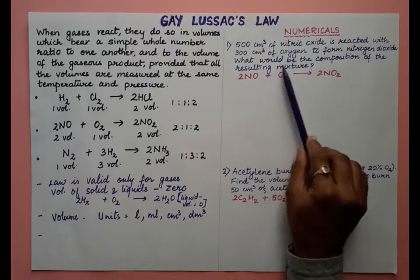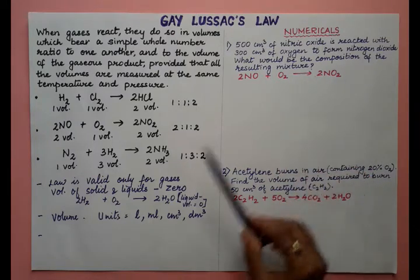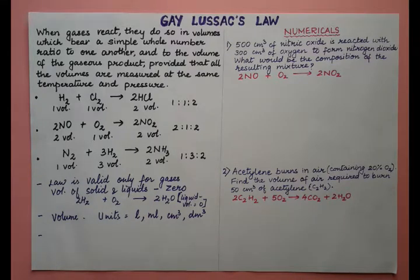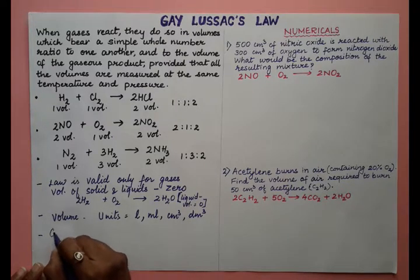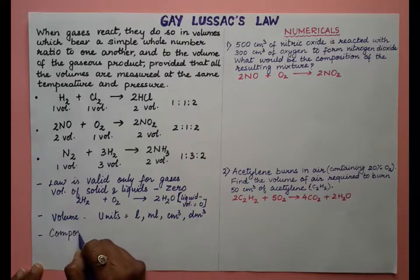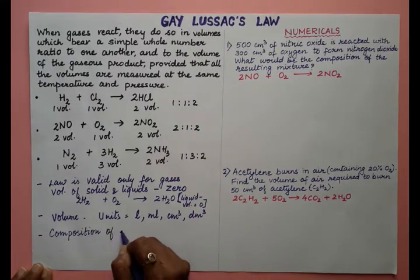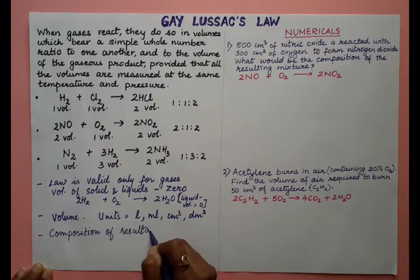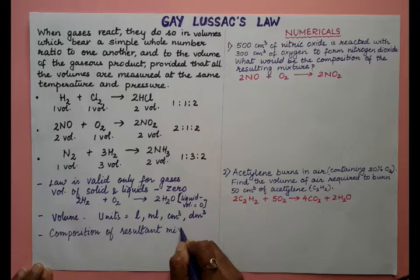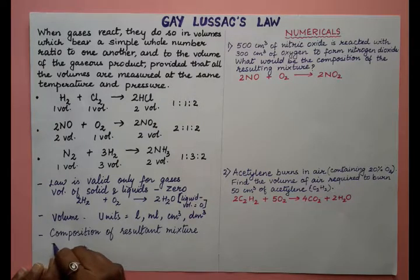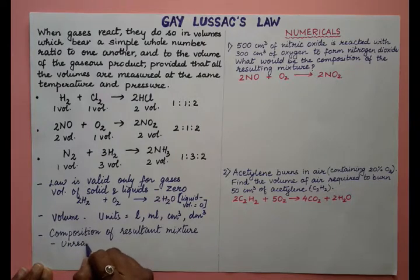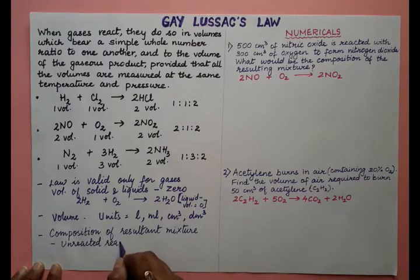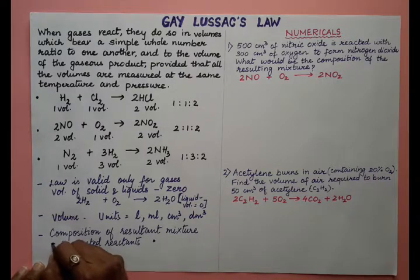For example, if the question asks 'what would be the composition of the resultant mixture?' — it is not necessary that all the reactant taken will be completely used up. So the unused reactants will come out, and we have to calculate those. Composition of resultant mixture means: first, unreacted reactant, and second, products formed.